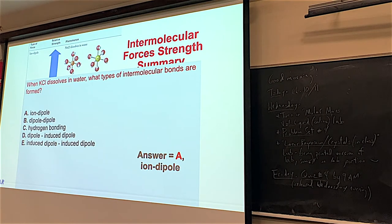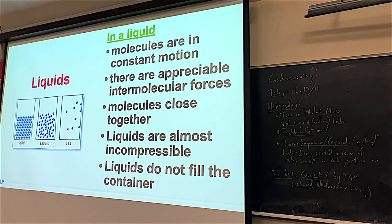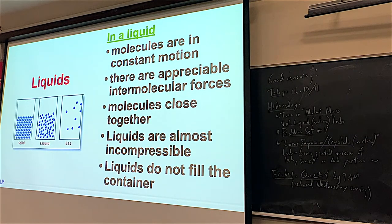Now that we've talked about intermolecular forces, we can start thinking about what exactly makes liquids liquids, and how to turn liquids to gases or liquids to solids. In the last chapter we looked at gases — a lot of PV = NRT. Liquids are a really interesting phase. In a liquid, the molecules are constantly moving, and liquids do have appreciable intermolecular forces — something is holding the liquid molecules together, and they're pretty close to each other.